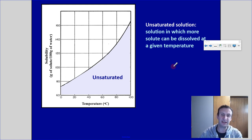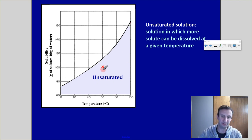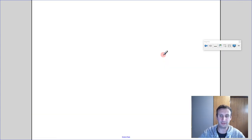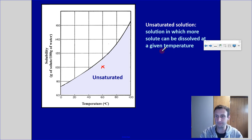An unsaturated solution is one in which more solute can still be dissolved at a given temperature — as long as I'm under the curve line, I have an unsaturated solution. For example, 100 grams at 60 degrees Celsius is still unsaturated because I could dissolve another 12 or so grams. Hopefully that makes sense. Any questions, let me know — have a great day.